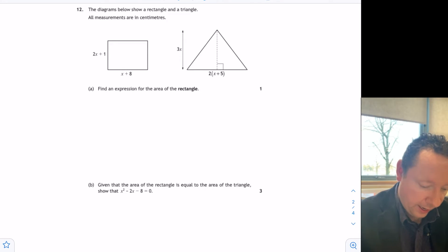Okay, part A. Find an expression for the area of the rectangle. Don't be scared by this. You all know the area of a rectangle is length times breadth. So just write down what the length of a rectangle is. If it was a number, you would write down 4, 5, 6, but in this case, it's x plus 8. So I'll just write down x plus 8.